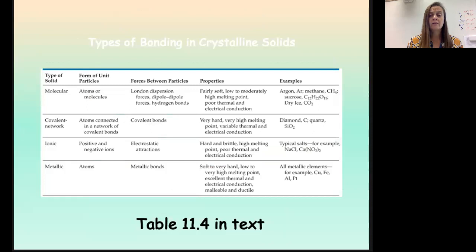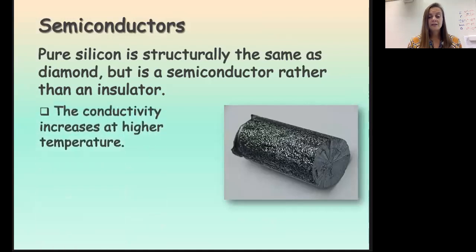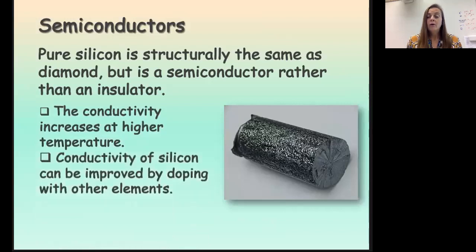Okay, so one last category of solids, and that is semiconductors. A semiconductor is somewhere between a conductor and an insulator. It can conduct in certain situations. As temperature is increased, silicon becomes more and more conductive. We can also improve the conductivity of silicon by doing something that we call doping with other elements.